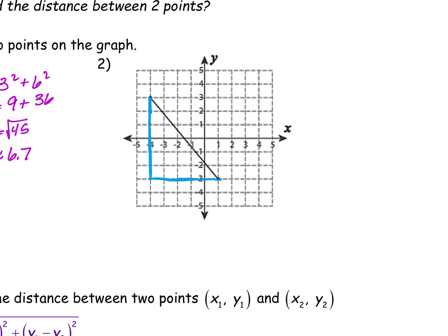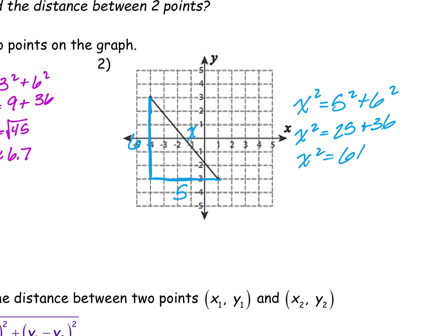What is the length of my bottom? Five. Beautiful. So I've got X squared equals 5 squared plus 6 squared, which gives me 25 plus 36 equals 61. And then I square root it, and X is approximately — 7.8. Beautiful.